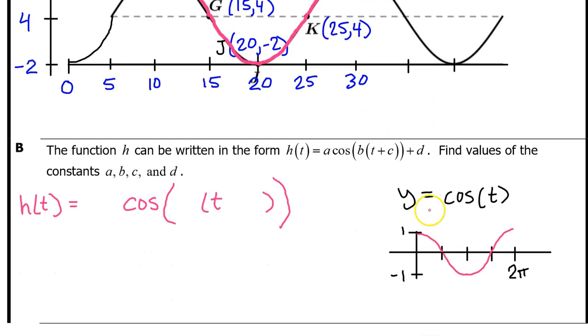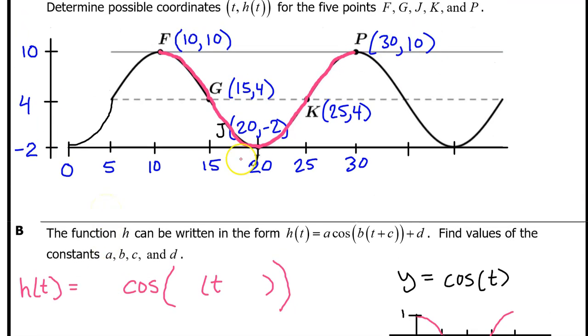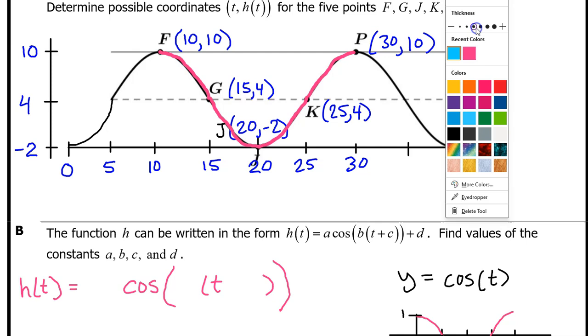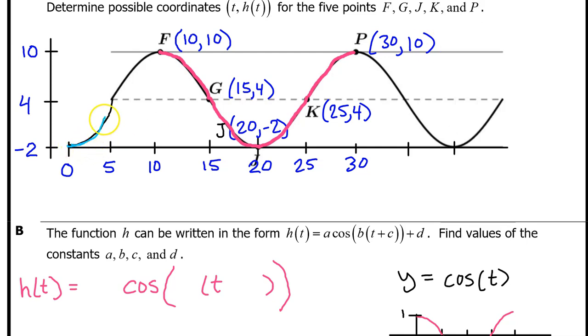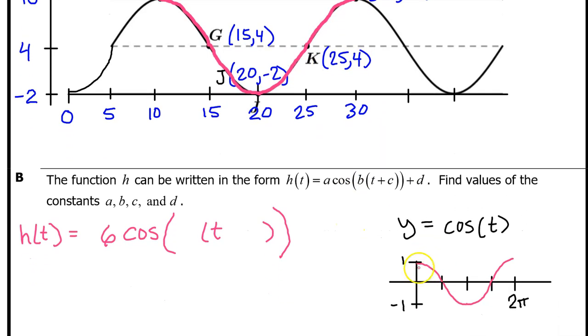I'm going to base my equation on this period of h(t). Because this period looks just like the parent function, the A value will be positive. If I had chosen a period that was upside down compared to the parent function, for example, if I had chosen one like this, then the A value would be negative. The A value comes from the distance between the midline and the highest value, which in this case is 6, the distance from 4 to 10. Because I have chosen a period of h(t) that is oriented the same way as the parent function, the A value will be positive.